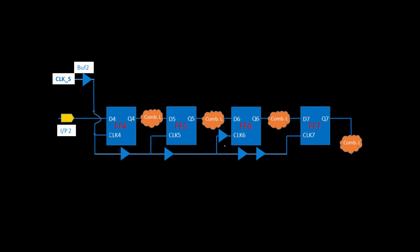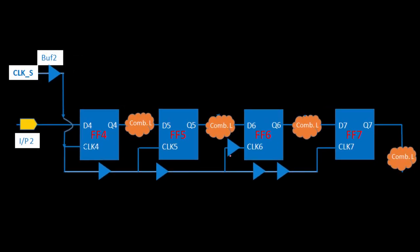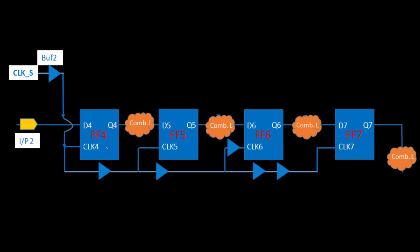In the previous lecture we discussed that to fix the hold violation within FF5 and FF6, we will not recommend touching any buffer near the clock pin. We will not remove a buffer near the clock. It was recommended that we remove the buffer from the common parts. We also discussed that this common buffer is not going to affect the next or previous stage — that statement is correct, but in real design it is not correct; there are a lot of complexities.